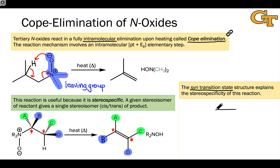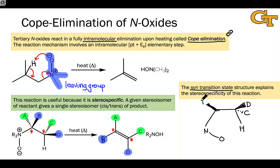The transition state involves syn elimination, meaning the acidic hydrogen and the leaving group are on the same side of the plane of the soon-to-be-formed alkene. This fixes the orientations of the substituents on the stereogenic carbon atoms, with B and D on the same side of the transition state and A and C on the same side. As electron flow occurs, the orientations of substituents linked to the stereogenic carbons don't change.